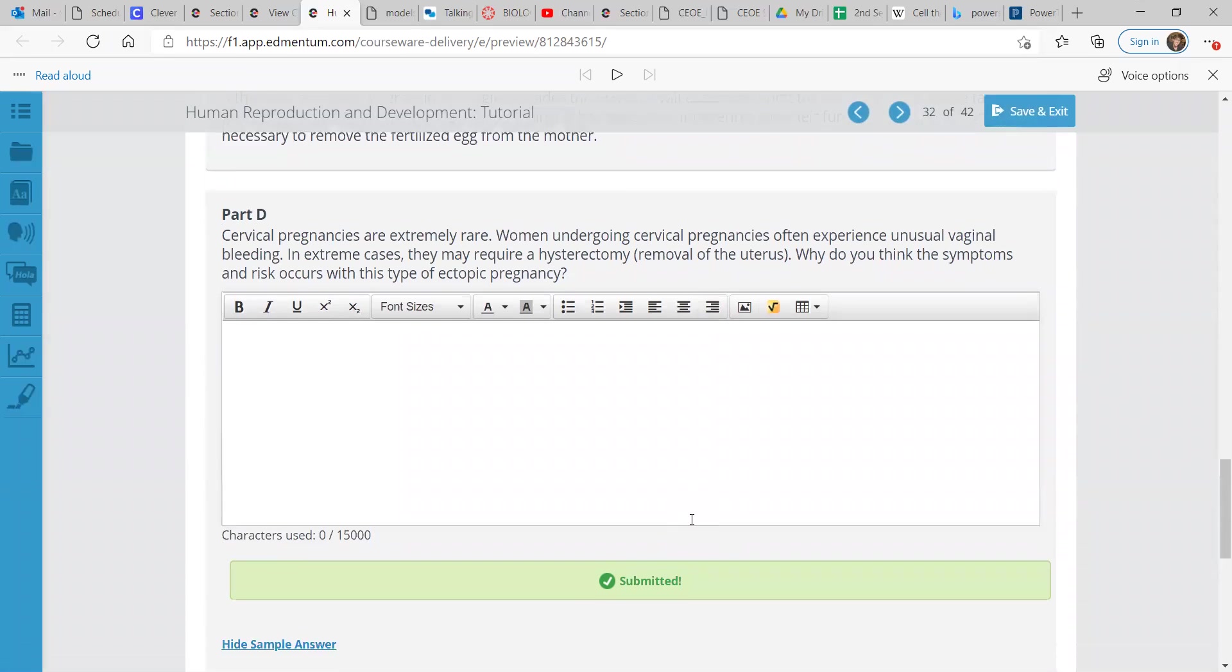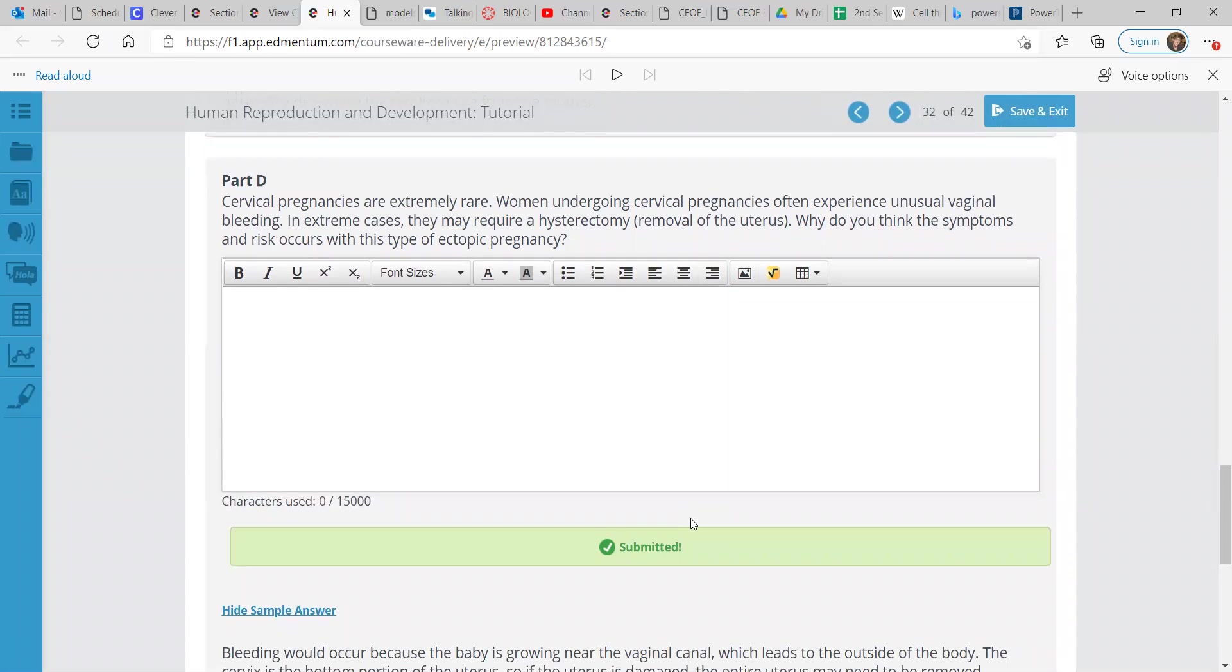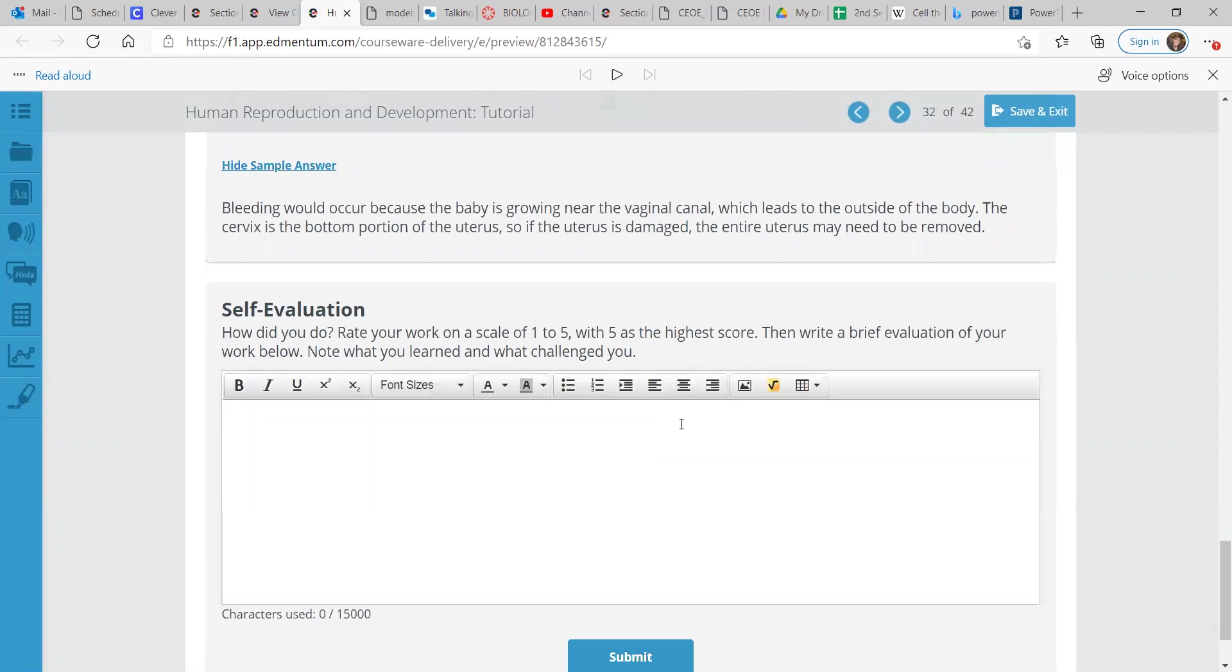Part D. Cervical pregnancies are very rare. Women undergoing cervical pregnancies often experience unusual vaginal bleeding. In extreme cases, they may require a hysterectomy or the removal of the uterus altogether. Why do you think symptoms and risks occur with this type of ectopic pregnancy? Bleeding would occur because the baby is growing near the vaginal canal that leads to the outside of the body. The cervix is the bottom portion of the uterus. So if the uterus is damaged, the entire uterus may need to be removed.